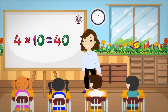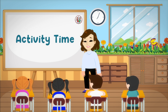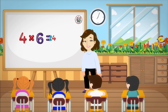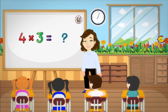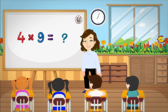Four, tens are forty. Four, tens are forty. It's activity time! Four, six are twenty-four. Four, threes are twelve. Four, nines are thirty-six.